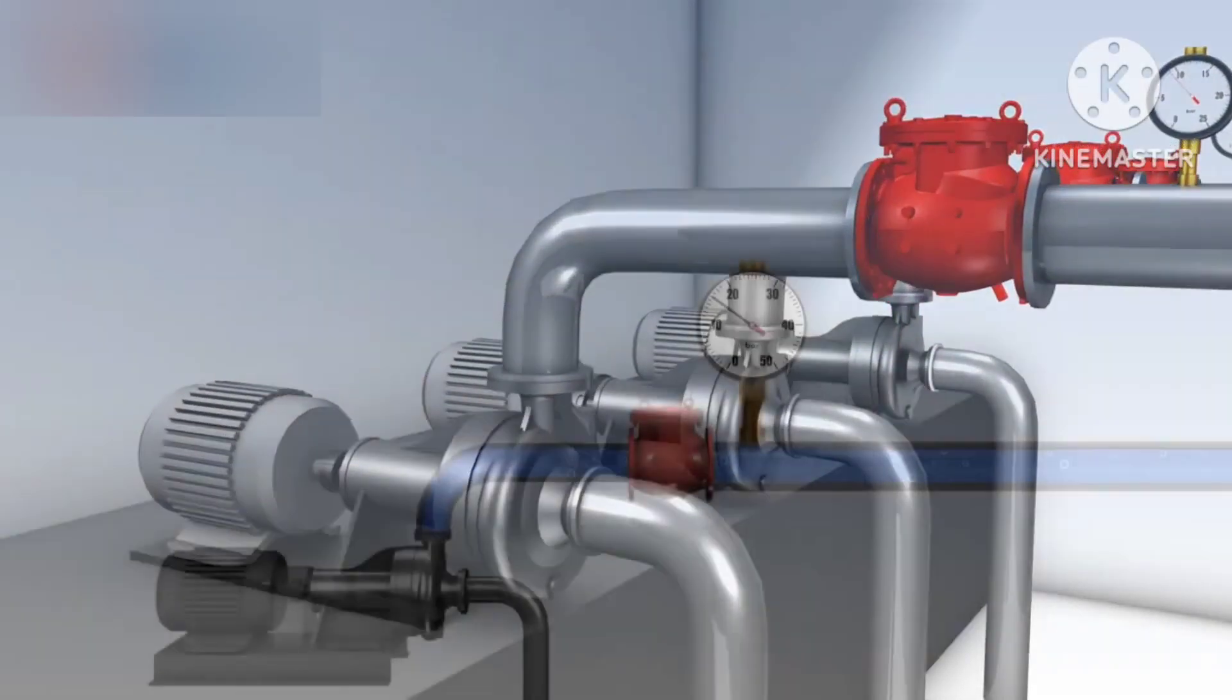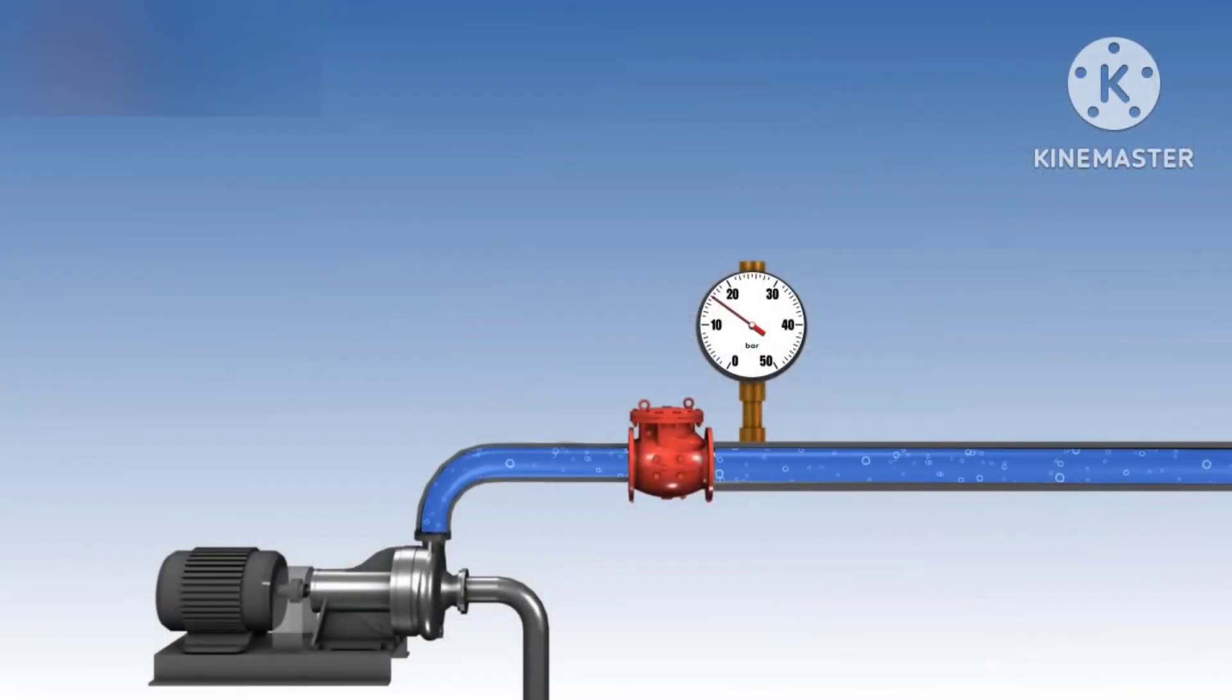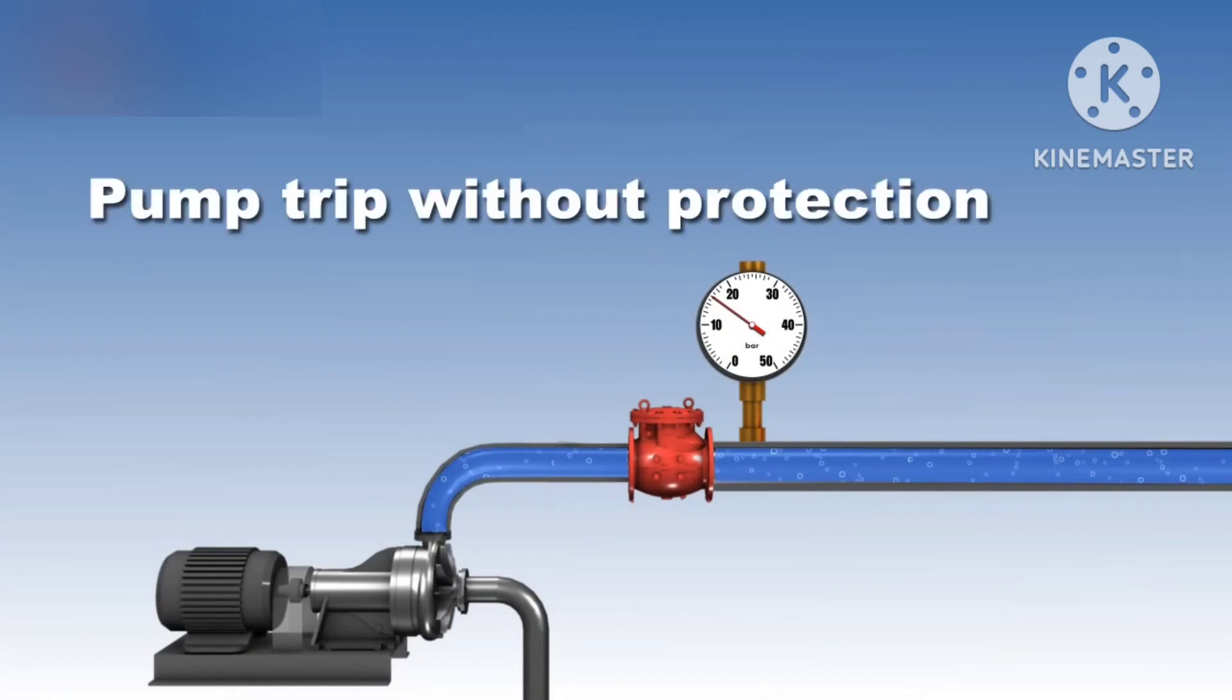Now I will show you how a surge vessel works with a small animation video. We see the pump is running in a normal condition without any protection. Suddenly the pump trips. Water will go towards the flow direction and reaches to a height portion.